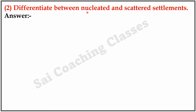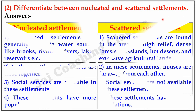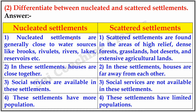Question 2. Differentiate between nucleated and scattered settlements. Nucleated settlements are generally close to water sources like brooks, rivulets, rivers, lakes, reservoirs, etc. Scattered settlements are found in areas of high-relief, dense forest, grassland, hot desert, and extensive agricultural land. In nucleated settlements, houses are close together, while in scattered settlements, houses are far away from each other.